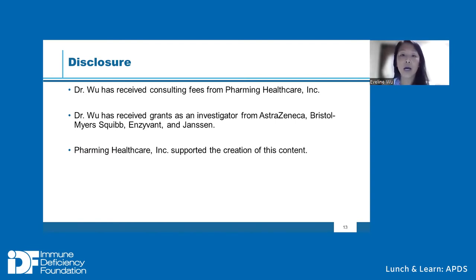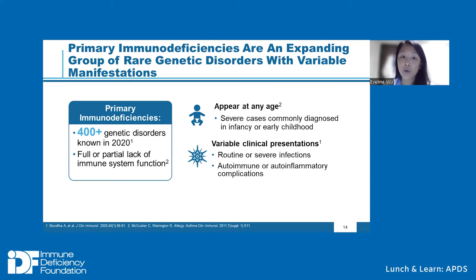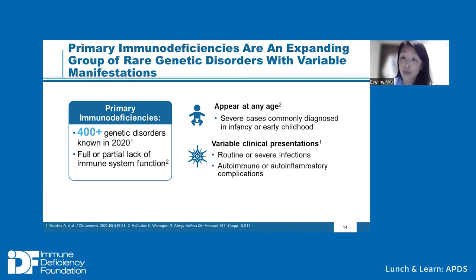Before we talk about APDS specifically, I thought it would be important to take a step back and talk about primary immunodeficiencies in general. Primary immunodeficiencies are an expanding group of rare inherited genetic disorders with variable manifestations. As reported in 2020, over 400 inherited genetic primary immunodeficiencies have been recognized and that list is growing. All of these share that there is a partial or complete lack of some function that makes the immune system unable to do its job.